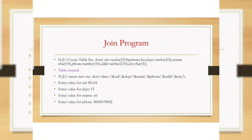Explaining the join program. Two tables are created. The first one is the student table and the second one is the student paper table. Create table student with columns: id, department, name, phone number, address, city. Tables are created.